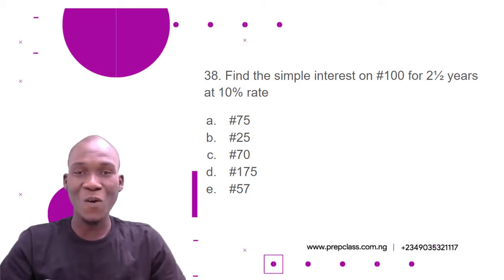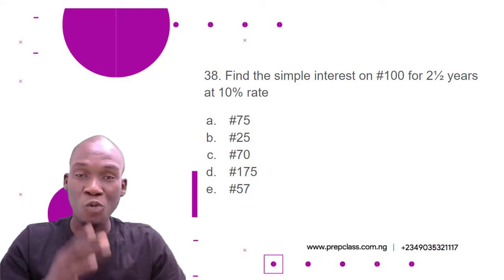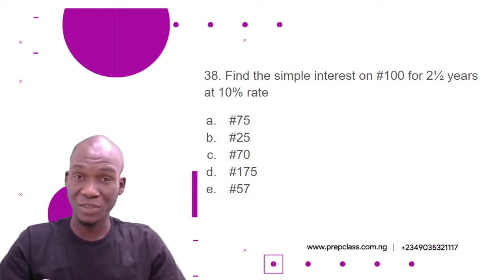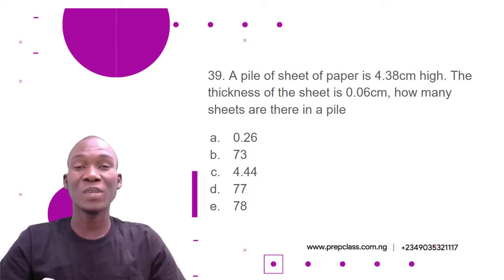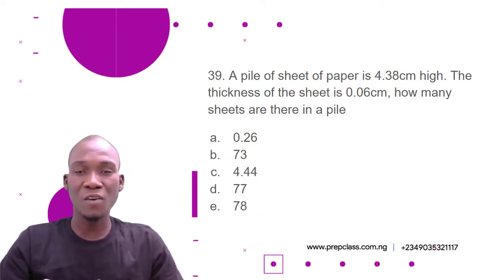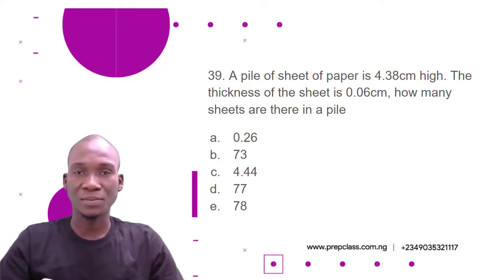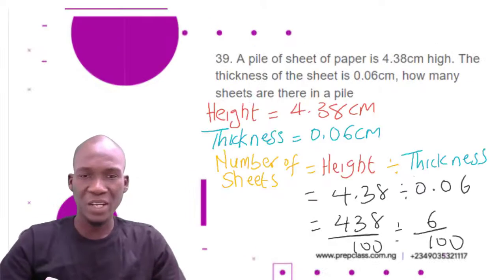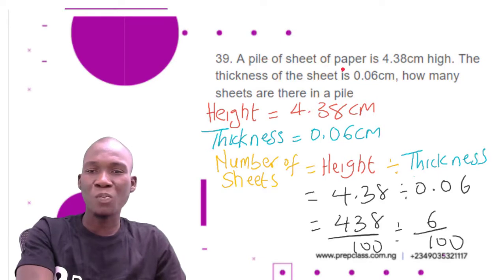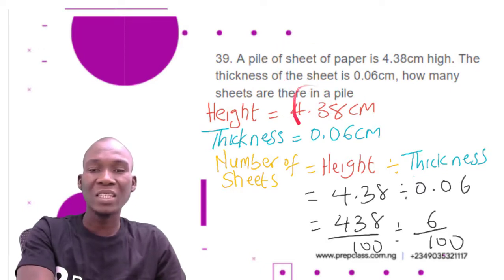Now question number 39: A pile of sheets of paper is 4.38 cm high. The thickness of each sheet is 0.06 cm. How many sheets are in the pile? Options: A) 0.26, B) 73, C) 4.44, D) 77, E) 78. The height of the pile is 4.38 cm and the thickness of one sheet is 0.06 cm.